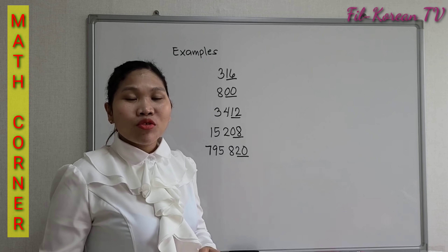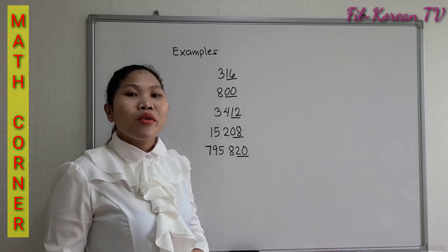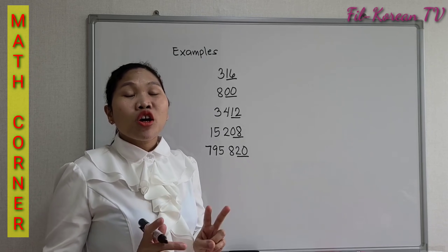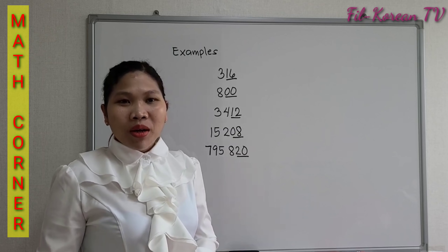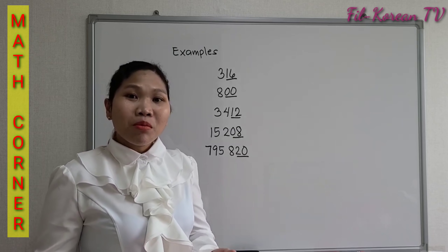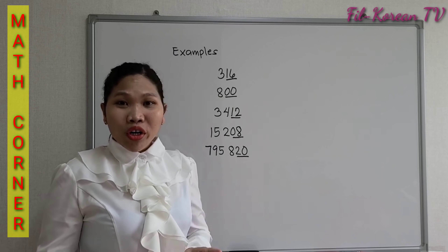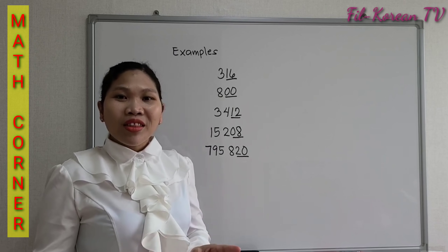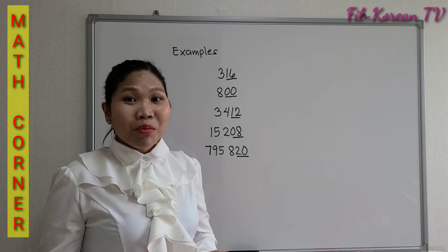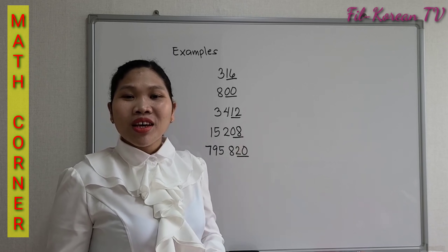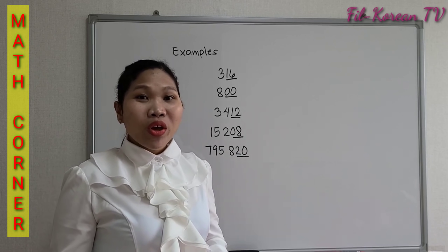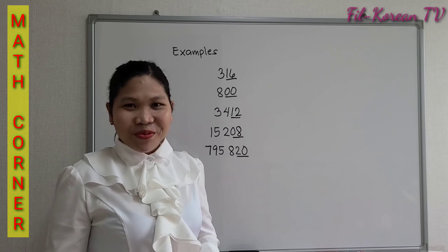That is the divisibility rule for 4. Just look at the last two digits of a number. If the last two digits of a number is a multiple of 4, that number is divisible by 4. Or, if a number ends in two zeros, that number can be divided by 4 with an exact answer.